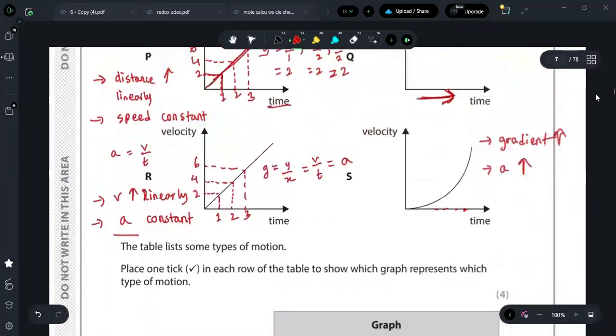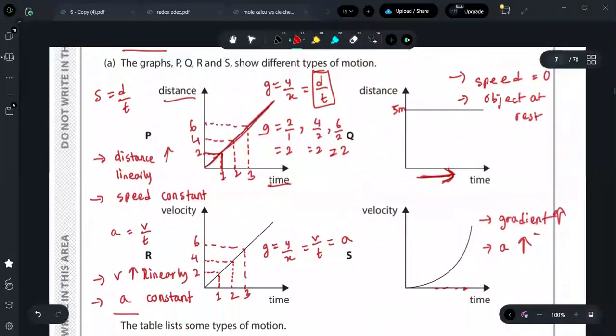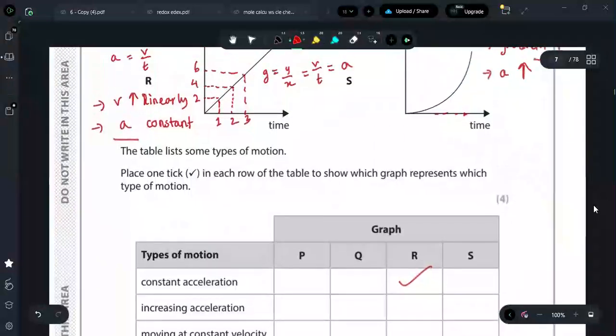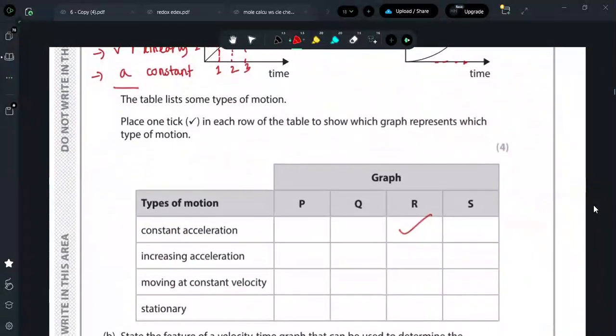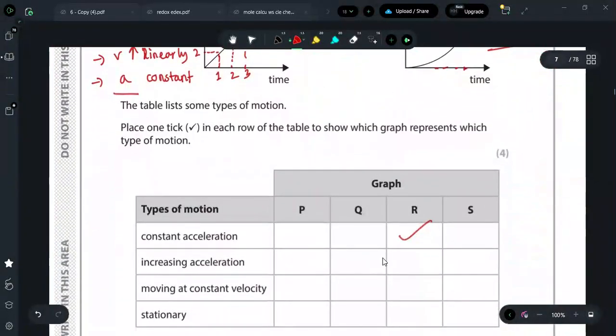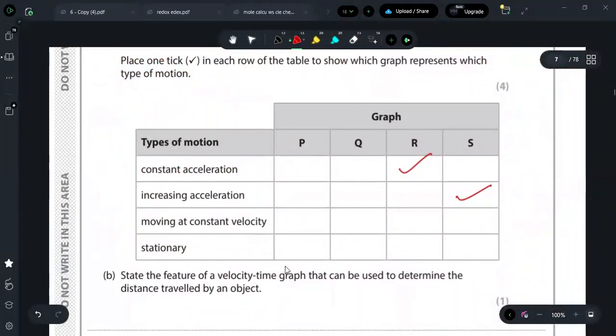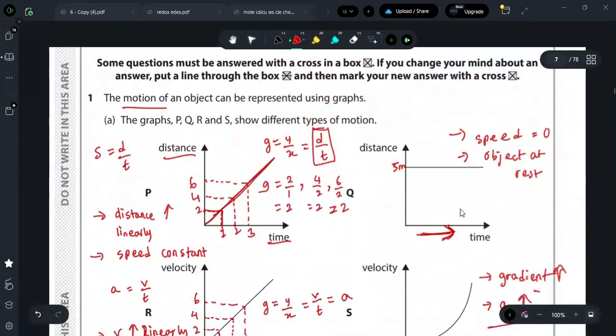Increasing acceleration. I will have to find the acceleration, the gradient, and figure out which increases. Just now we saw this acceleration increased. So it's supposed to be S. Then, moving at constant velocity. Velocity constant, meaning velocity at all times is the same. Speed or velocity is the same thing. So velocity constant. So it will be P. And lastly, stationary. Stationary or rest, which is Q.